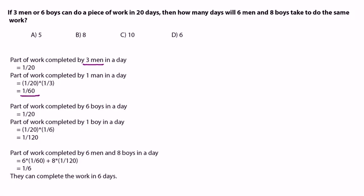In the same way, 6 boys can do the work in 20 days, so the part of work completed by 6 boys in a day is 1/20. The part completed by 1 boy in a day is (1/20)÷6 = 1/120.